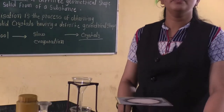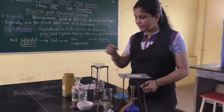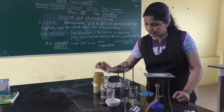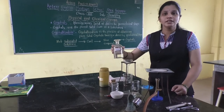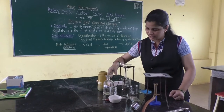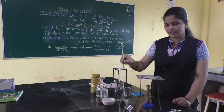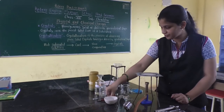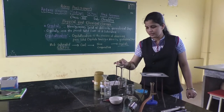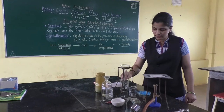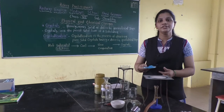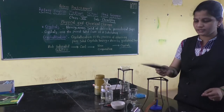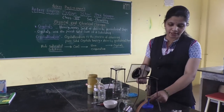The crystallization method is given in your textbook. For that, what do we need? This is copper sulfate — it is one chemical. This is dilute H₂SO₄, meaning sulfuric acid. This is a funnel. This is known as a tripod stand. This is a beaker. And here in this petri dish we have taken copper sulfate powder. This is wire gauze, and this is the burner.